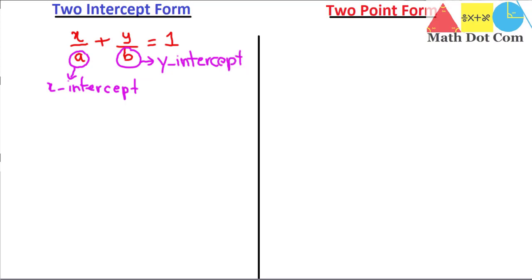Now what is intercept? The x-intercept is the point where the graph intersects the x-axis, and at that point y is equal to 0. The y-intercept is the point where the graph intersects the y-axis, and at that point x is equal to 0. So in the two-intercept form we have two intercepts — that's why it is called the two-intercept form.